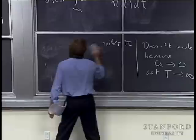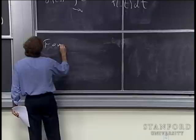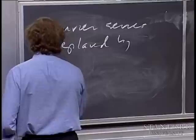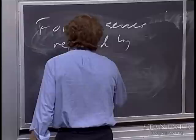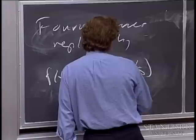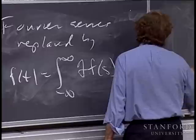So as T tends to infinity, the Fourier series is replaced by an integral. f(t) equals the integral from minus infinity to infinity of the Fourier transform of f at s, times e to the 2πi·s·t, ds.